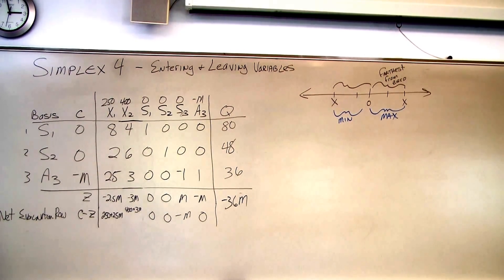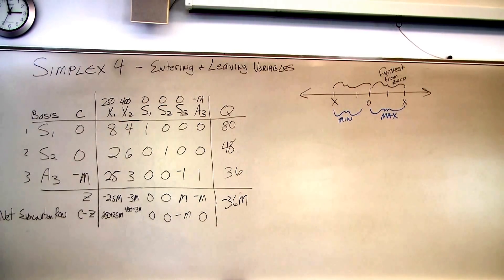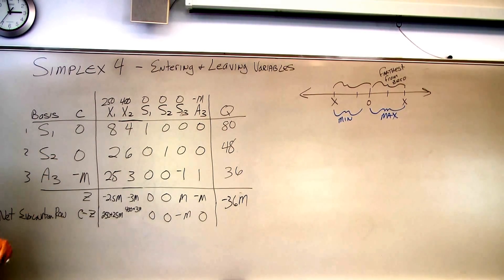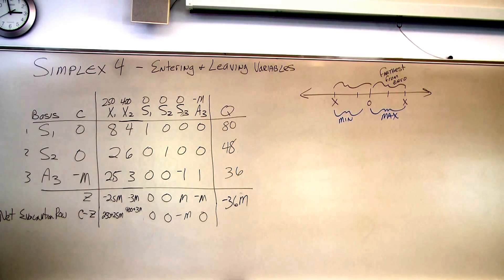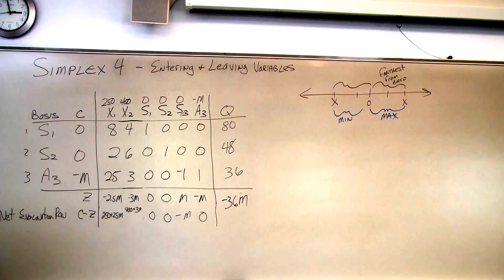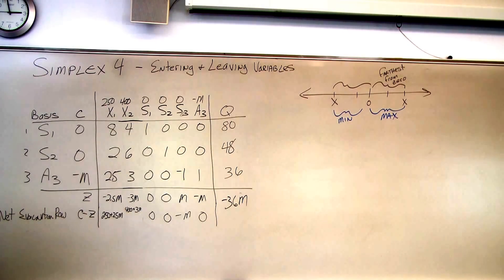All right, the next thing we want to do with our simplex is identify the entering and leaving variables. We know we don't have an optimal solution, so basically, almost like the extreme point method, we want to go to the next point in the graph and determine if that's our optimal solution.